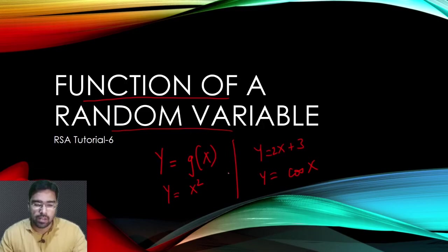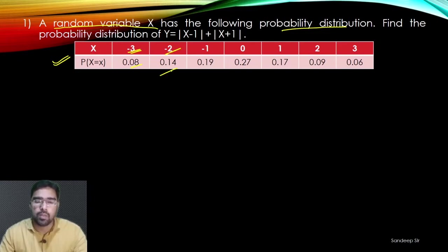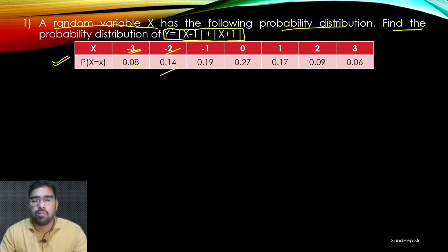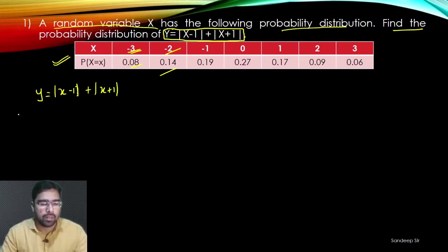In the first example, a random variable X has a probability distribution given in a table. When X is minus 2, the probability is 0.14, and so on. We are asked to find the probability distribution of random variable Y, where Y is |X minus 1| plus |X plus 1|. Here both X and Y are discrete random variables.